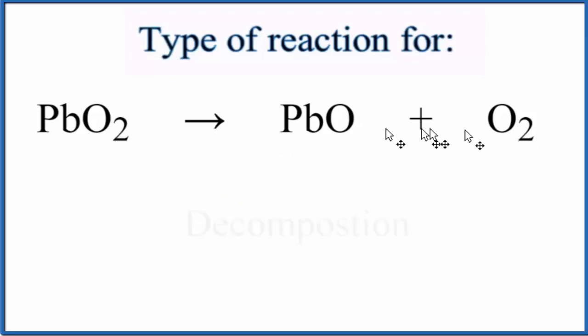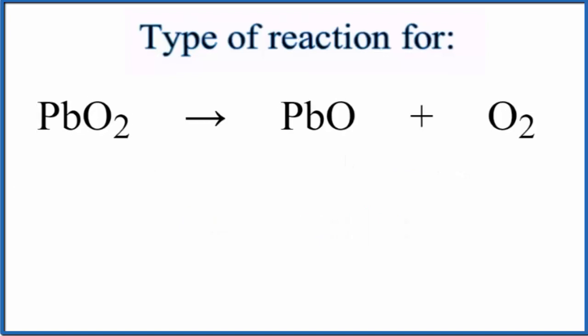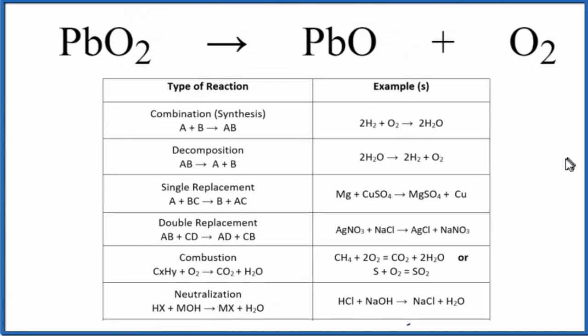Because it's decomposing, we call it a decomposition reaction. If we look at this table here of common chemical reactions, we can see these different types and here is decomposition. It follows this general pattern, AB yields A plus B.